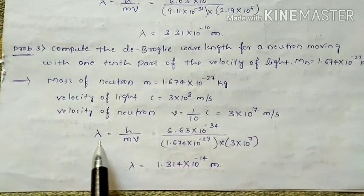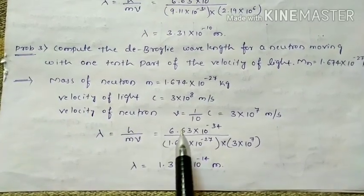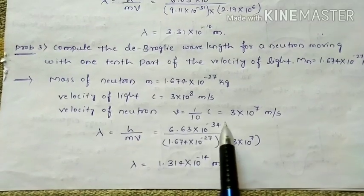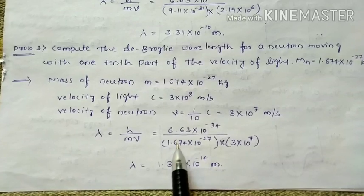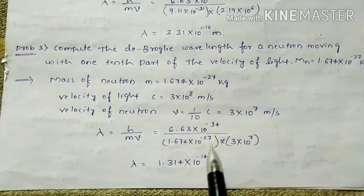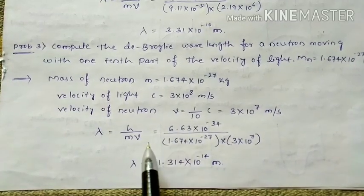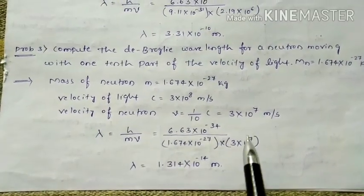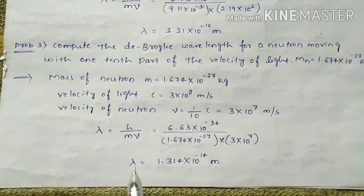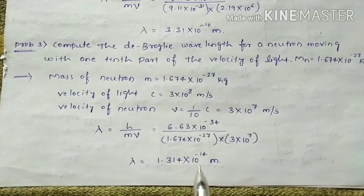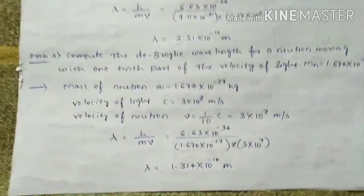Using lambda = h / (m × v): h = 6.63×10⁻³⁴, m = 1.674×10⁻²⁷ kg, and v = 3×10⁷ m/s. Substituting all values, we get lambda = 1.314×10⁻¹⁴ meter. That is the de Broglie wavelength for the neutron.